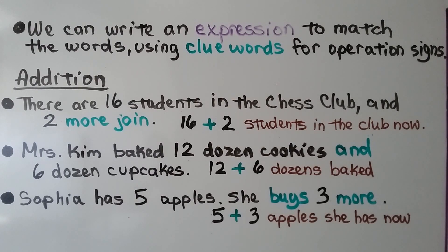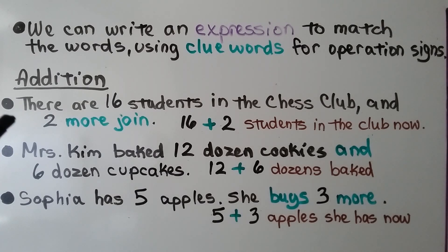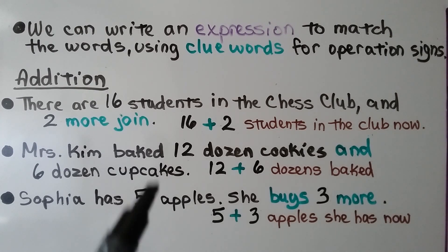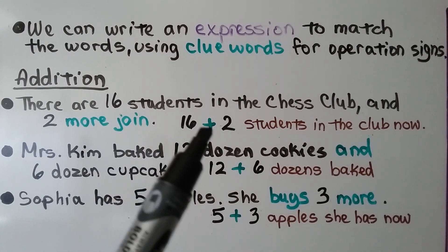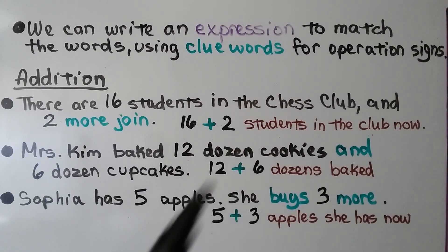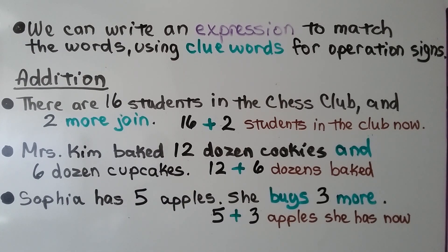We can write an expression to match the words using clue words for operation signs. For addition, there are 16 students in the chess club and two more join. Because more are joining, we write 16 plus 2. That represents the students in the club now.